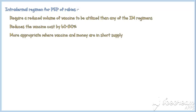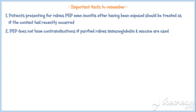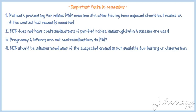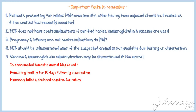Finally, some important facts to keep in mind on post-exposure prophylaxis of rabies: Patients presenting for rabies PEP even months after having been exposed should be treated as if the contact had recently occurred. PEP does not have any contraindications if purified rabies immunoglobulin and vaccine are used — pregnancy and infancy are not contraindications. PEP should be administered even if the suspected animal is not available for testing or observation. Vaccine and immunoglobulin administration may be discontinued if the animal is a vaccinated domestic animal, or remains healthy for 10 days following observation, or is humanely killed and declared negative for rabies.